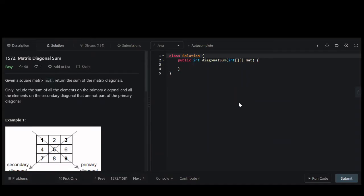Hi there. In today's video, we will be talking about LeetCode Problem number 1572, Matrix Diagonal Sum.